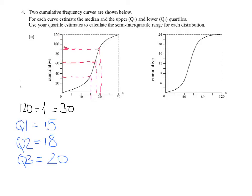So I've been able to read off the graph by cutting my data into 4. So there are 4 30s in 120. And I've read off values for quartile 1, 2, and 3.